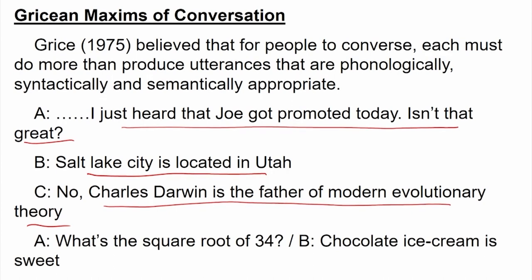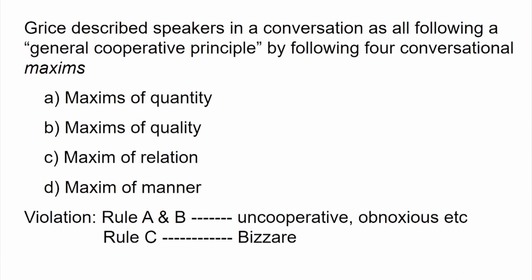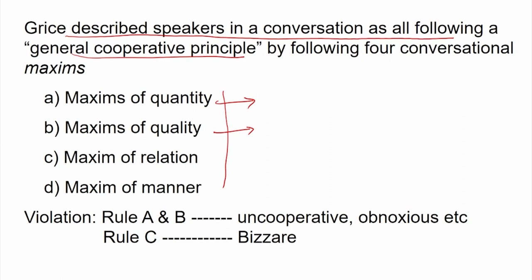Grice described four maxims speakers in a conversation should follow. The first is quantity — speak neither too much nor too little, but give enough information. For example, saying 'four o'clock' without specifying morning or evening violates quantity. The second is quality — whatever you say should have context and meaning relevant to the conversation; without quality or context in your speech, it will not be processed correctly.